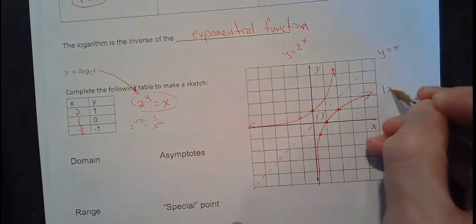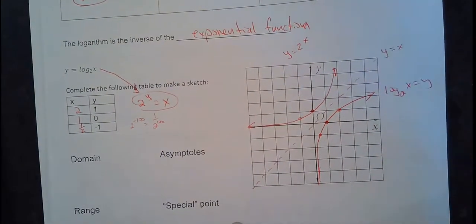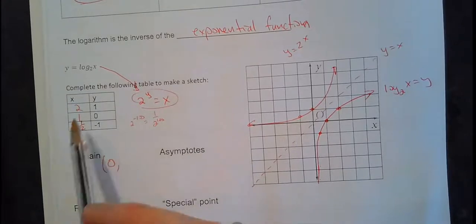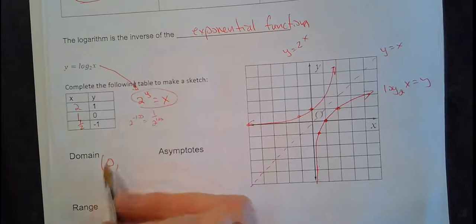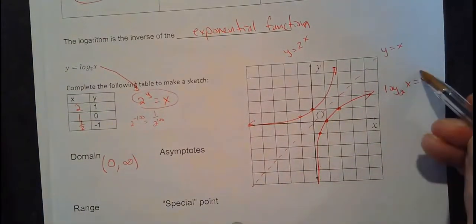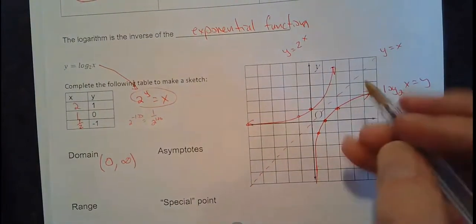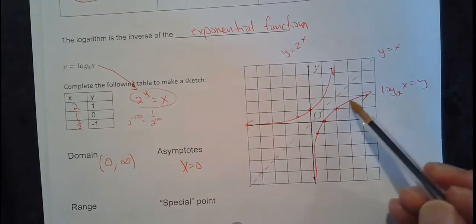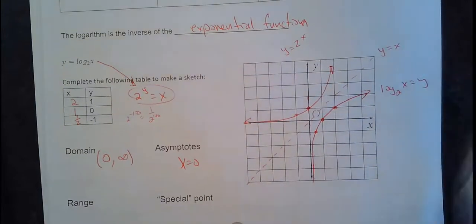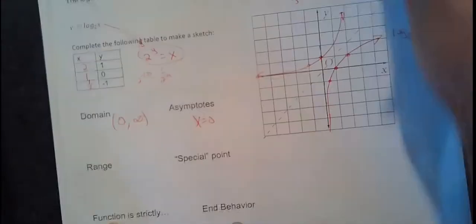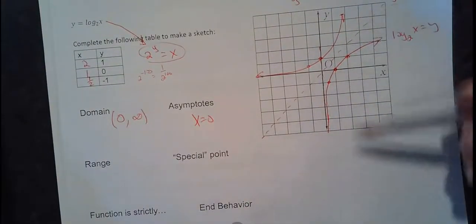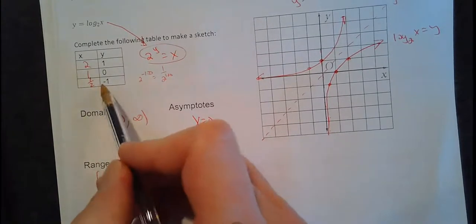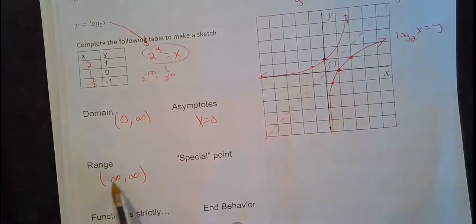Let's look at this: log base 2 of x equals y. What is the domain? The domain is x greater than 0, not including 0, because you never get 0 for an x — you never take 2 to a power and get nothing. So 0 is not included, but it does go off to infinity. The asymptote for this is x equals 0. This does go up to the right forever, so it's not bounded above. The range is negative infinity to infinity — you can plug anything in for y, since I can take 2 to any power I want.